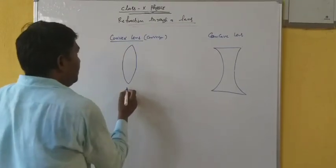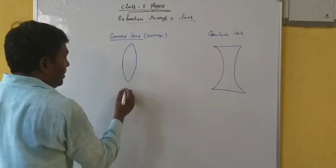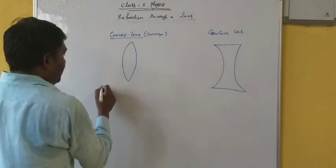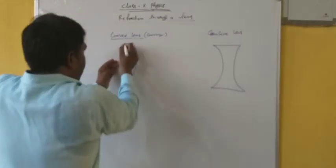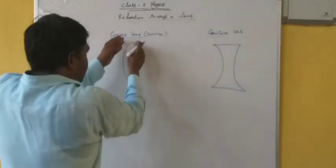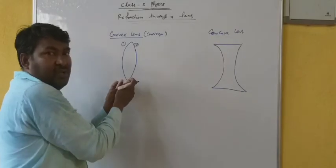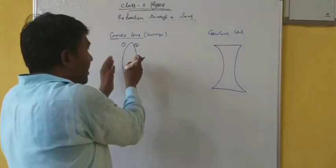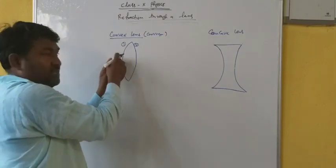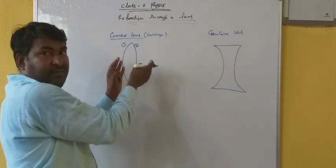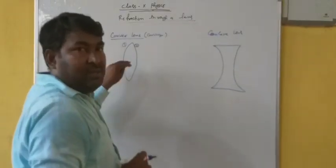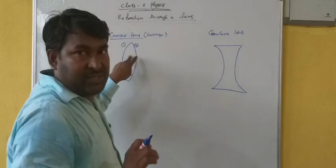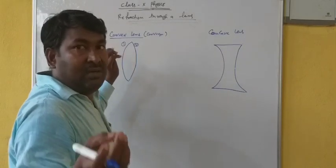Now some more classification. These convex lenses are of type biconvex. If both surface 1 and surface 2 are spherical surfaces — why spherical? Since they are part of a sphere. Both surfaces are part of a sphere. That is why this type of lens is called biconvex, since both surfaces are convex and spherical.